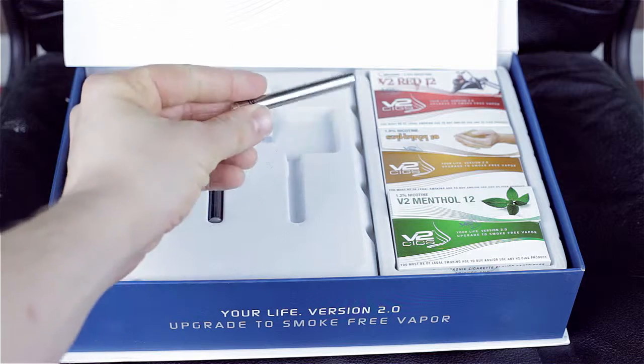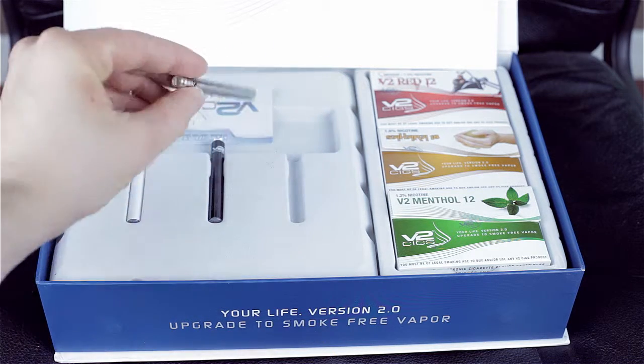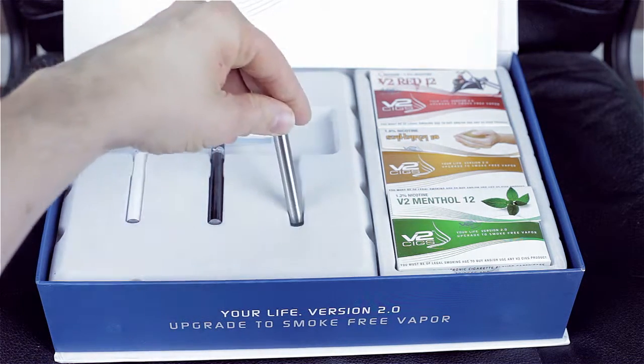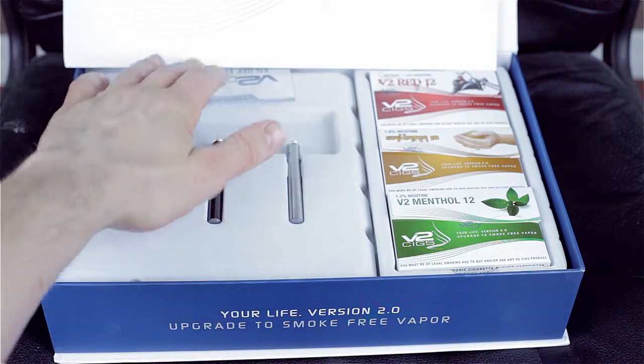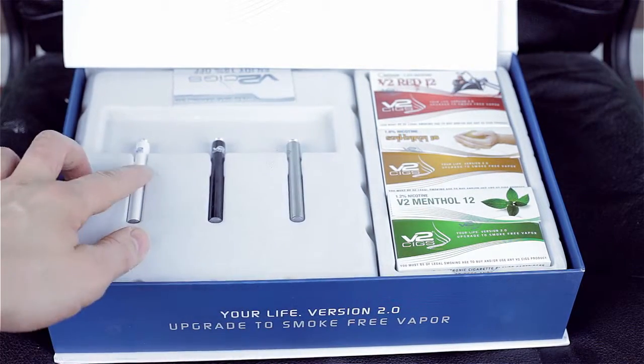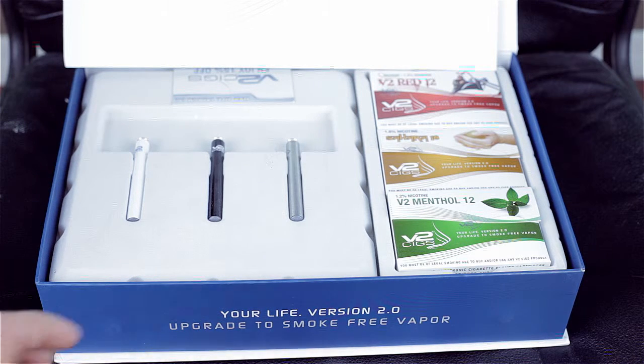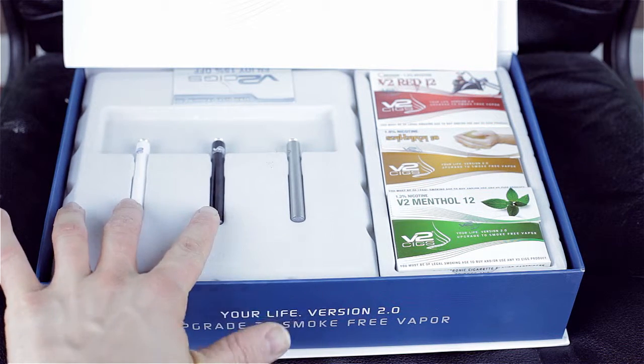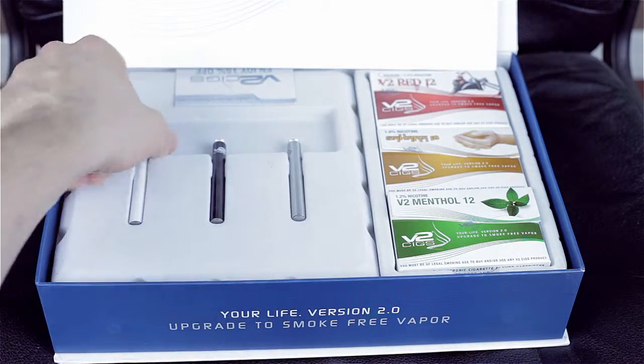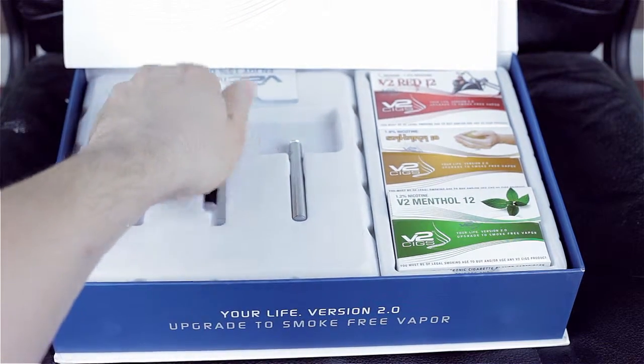You can also choose whether you want an automatic or manual style battery. An automatic allows you to simply puff on the electronic cigarette and you get vapor, whereas a manual has a little button you can push. You get these options for each one, so you can choose two blue batteries and a white, all three auto, or two auto and one manual, or whatever you want.